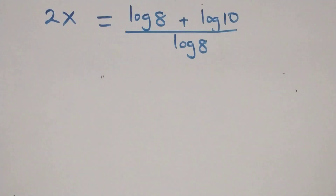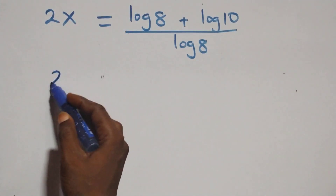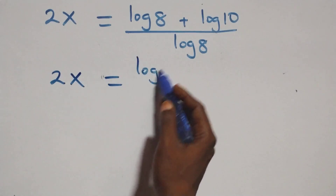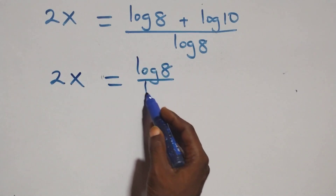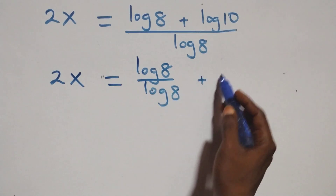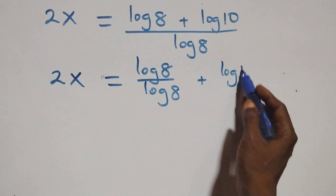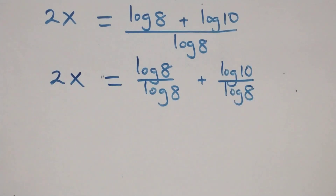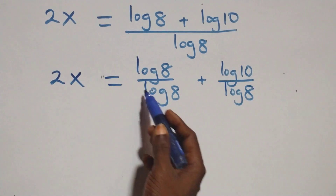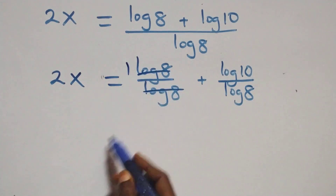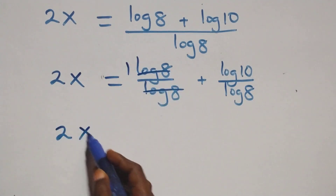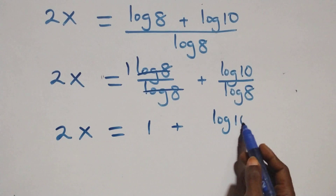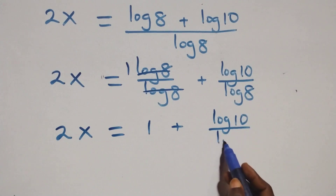Then we separate this into two fractions and we have 2x equals log 8 over log 8, plus log 10 over log 8. Here log 8 over log 8 cancels to 1, which implies 2x equals 1 plus log 10 over log 8.